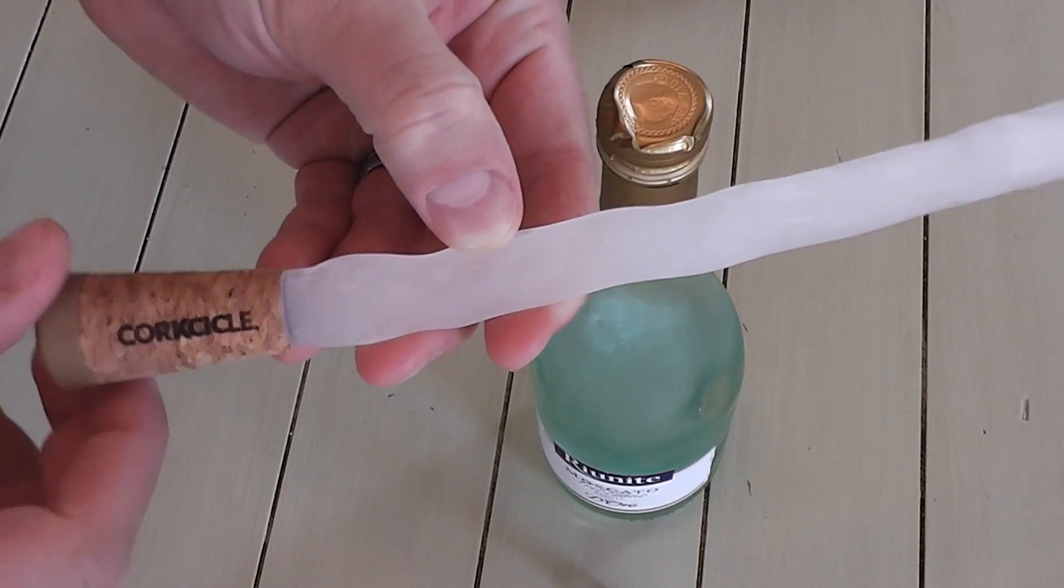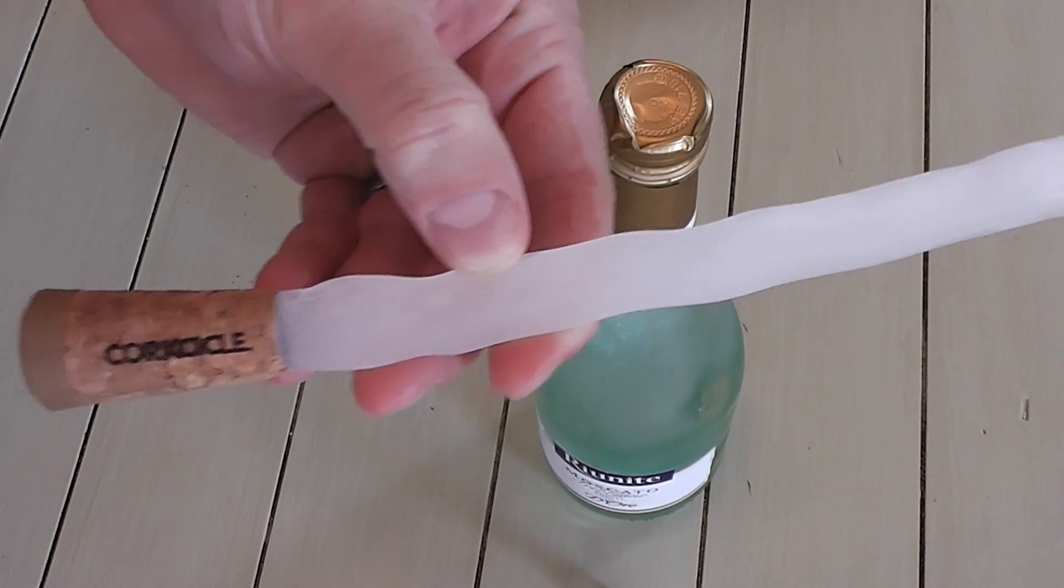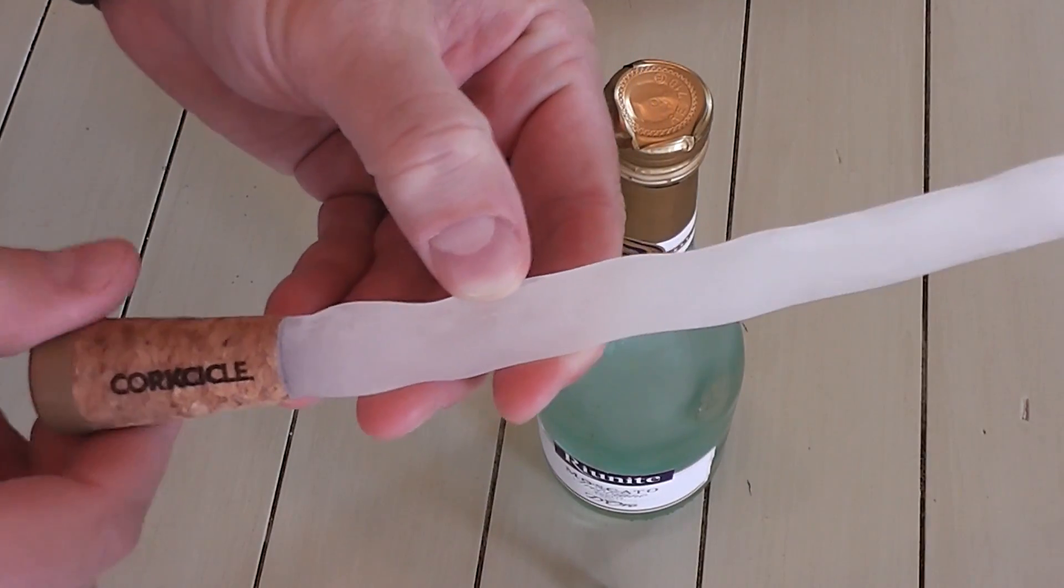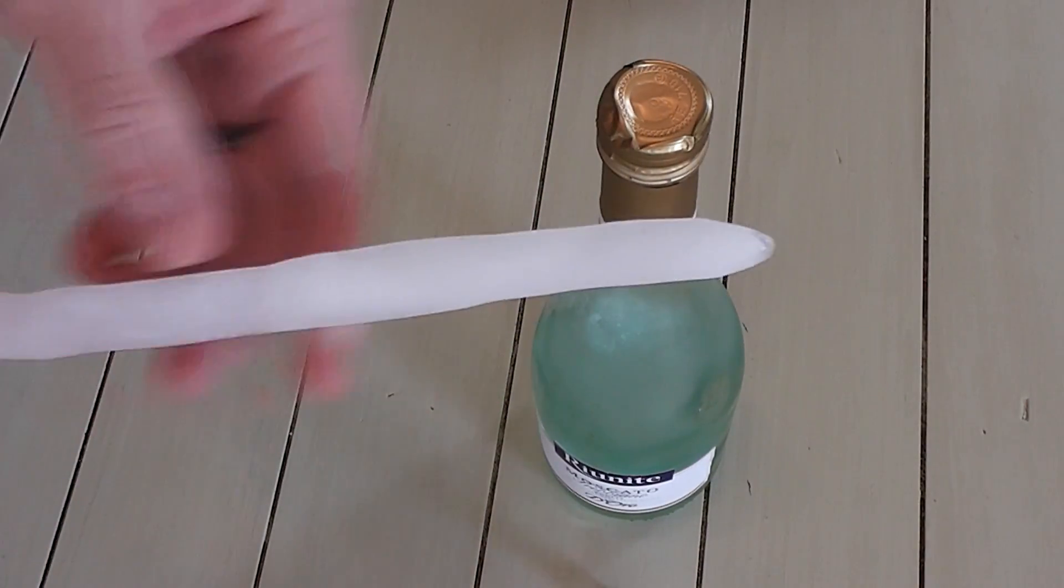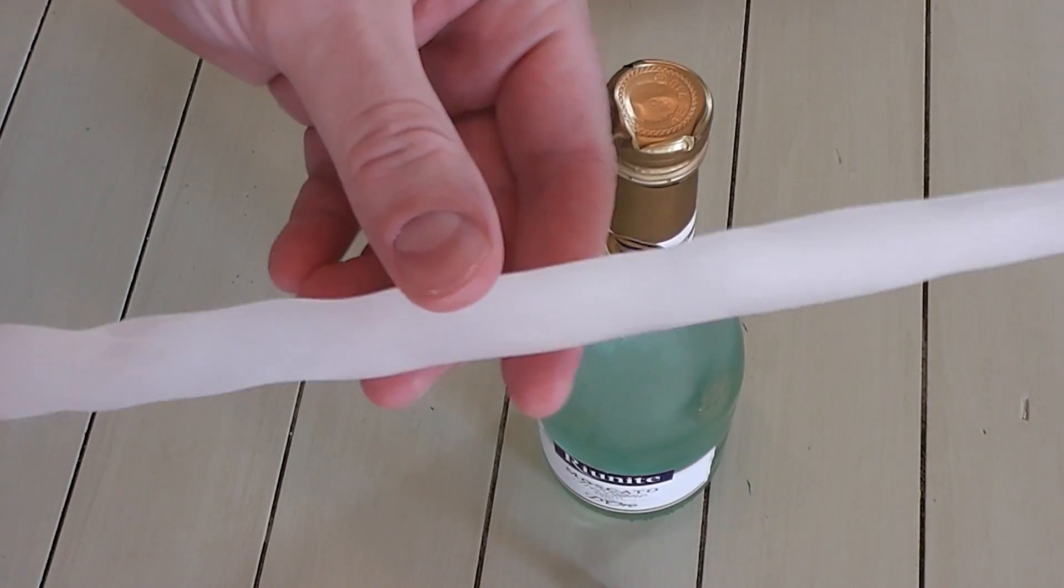You can see right there it says corksicle. That's like a wine top, you know a little cork you'd put in the top of a wine bottle. And then this right here looks like an icicle.